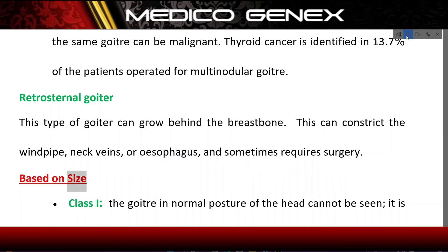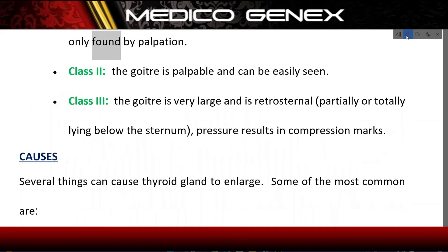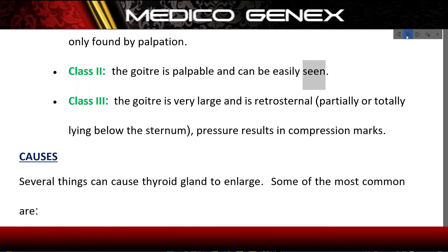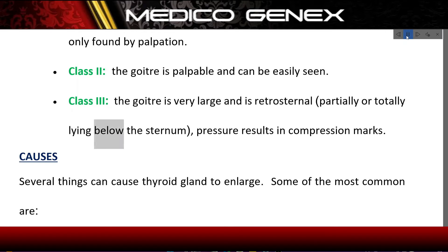Based on size: Class I — the goiter in normal posture of the head cannot be seen; it is only found by palpation. Class II — the goiter is palpable and can be easily seen. Class III — the goiter is very large and is retrosternal, partially or totally lying below the sternum; pressure results in compression marks.